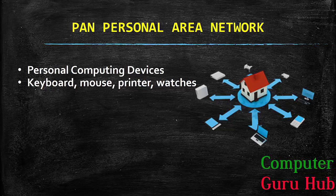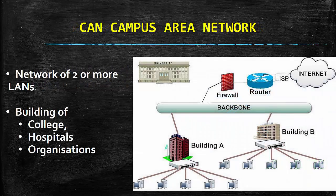Next we have CAN — Campus Area Network. When a network facility is provided in a college, hospital, or organization that consists of two or three buildings confined together, it will make a Campus Area Network. A campus area network can have a router, a firewall, or an ISP — that is, our Internet Service Provider — and basically it provides the functionality of internet.